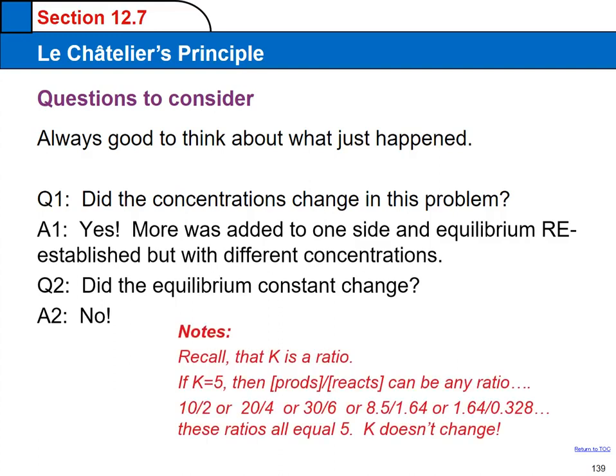K is just the ratio of the products to reactants. And if it's a number, let's say K was 5, how many different ways can you make 5 from a ratio of two different numbers? You could use 10 over 2, 20 divided by 4, 30 divided by 6, 8.5 divided by 1.64, or 1.64 divided by 0.328. All of these ratios equal 5. K doesn't change, but there's an infinite number of ratios that it could equal.